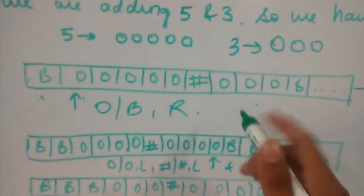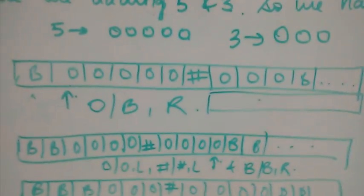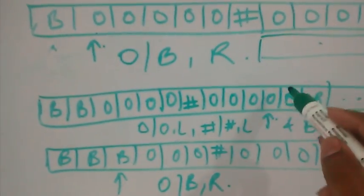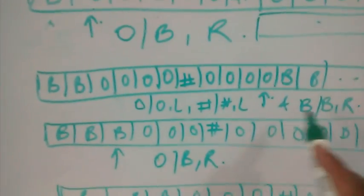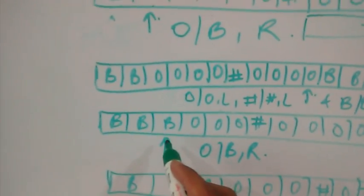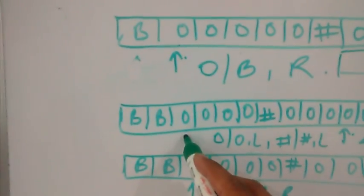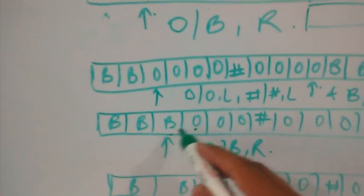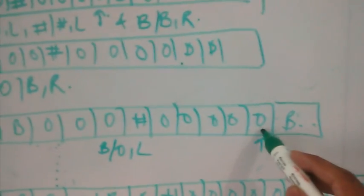Eventually it will copy all the zeros and the sum will appear at the right end — that is where we get our result. At the right end it detects the blank space and replaces it with zero, then moves left. At the left end it detects the blank space, moves to the next zero, and replaces that zero with blank space again. It is copying this zero to the other end, and has now replaced the blank space with a zero.